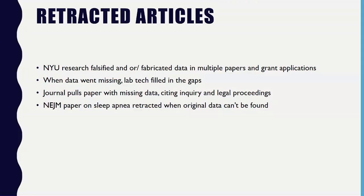The second example is a lab tech who filled in missing data. A reader noticed that a panel in one of the figures looked fishy, the authors did an internal investigation, and found that the lab tech had manipulated the panels after realizing some original data had been lost. In the third example, a journal pulled a paper because the author was not able to provide the raw original data or any laboratory notes for any of the experiments represented in the figures. The last one is a New England Journal paper on sleep apnea that also lost the original data and had to be retracted.